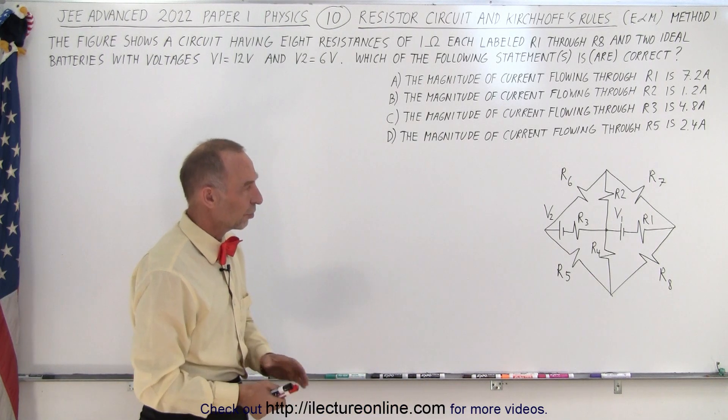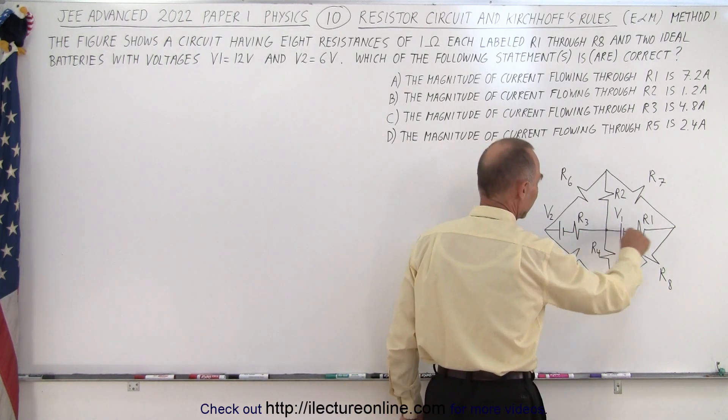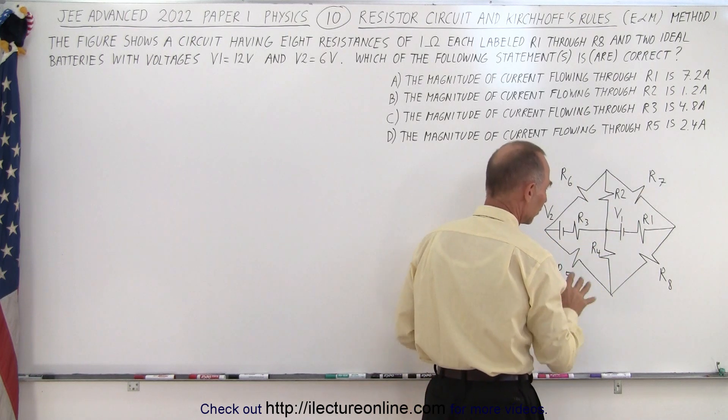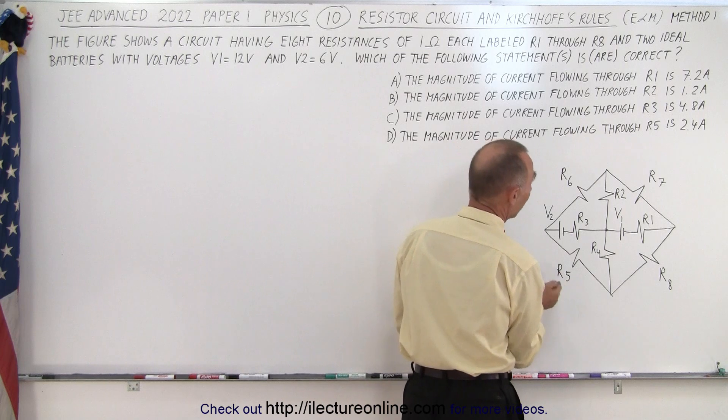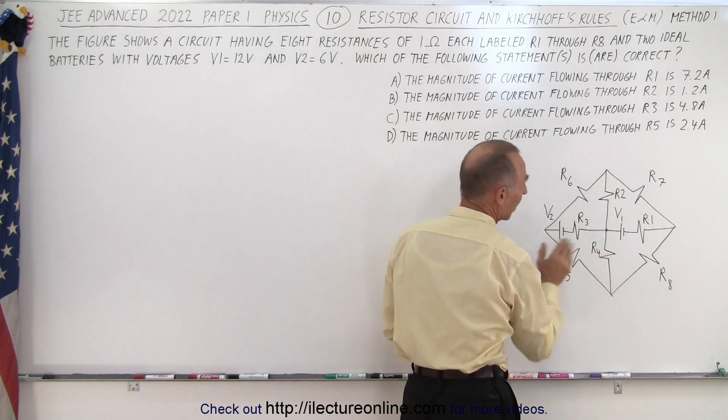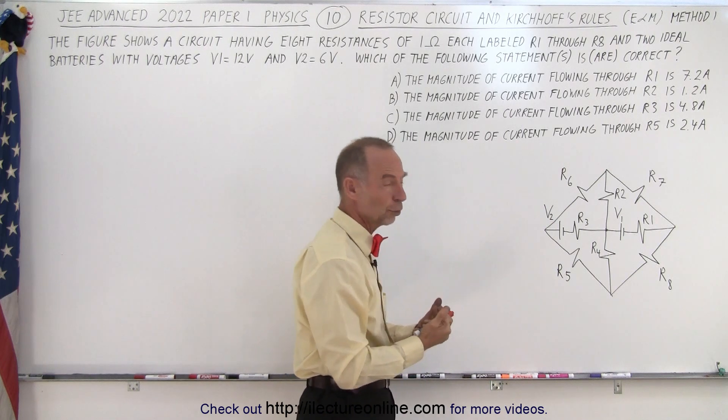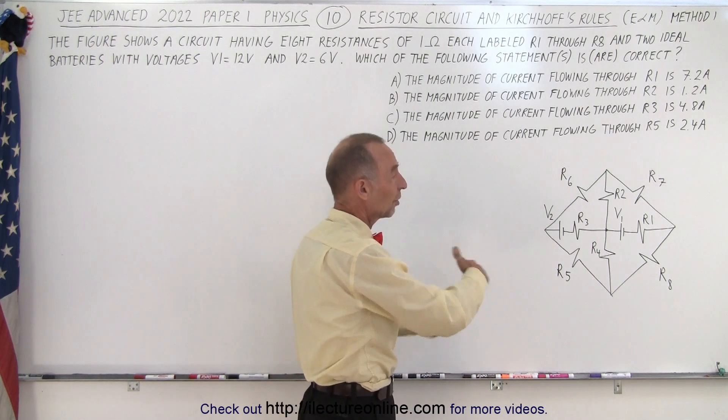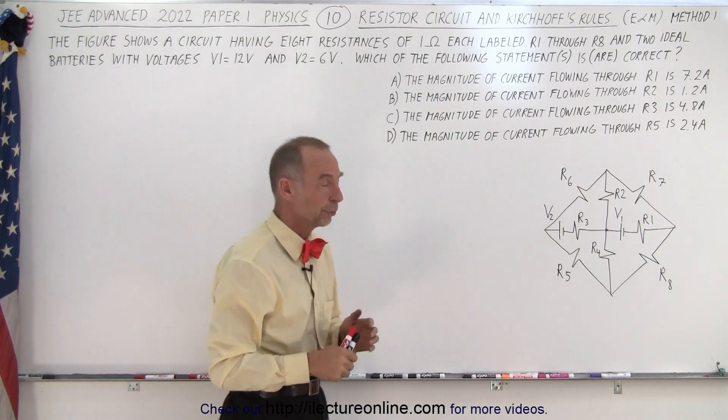So when you take a look at the circuit you realize that all of the batteries are in the two horizontal branches. There's no batteries anywhere else. There's perfect symmetry so what we could potentially do is we could collapse one half of the circuit on top of the other. We're going to do that as method two. We want to also show that we can just straight brute force it as is, work through it by using the Kirchhoff rules of current and voltages.